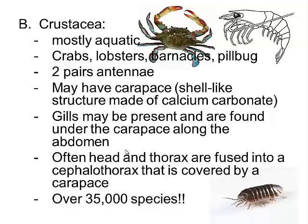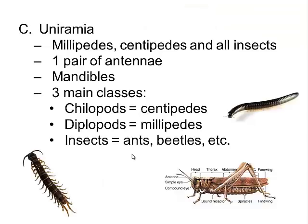The crustaceans are aquatic and include crabs, lobsters, pill bugs, and barnacles. They have two pairs of antennae and a carapace — a shell-like structure made up of calcium carbonate. Gills may be present and are found along the abdomen. The head and thorax are usually fused together into a cephalothorax, giving them two body segments. There are over 35,000 species. Key characteristics: two pairs of antennae and two body segments.